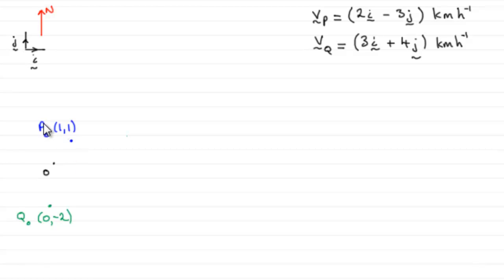So, we're told that P has position vector i plus j, which I've marked in as the coordinate 1,1, i plus j. And similarly for Q at 2pm when time t is 0, Q's at the point with position vector minus 2j. So, you can see I've gone two units down here.